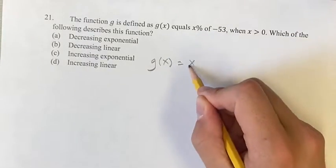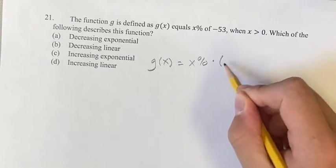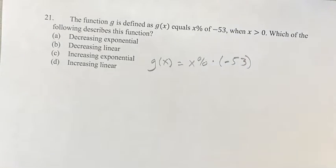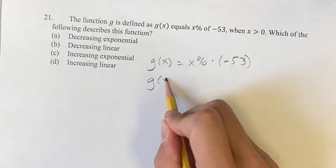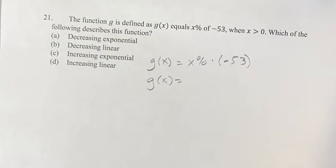So we're going to get that as x% times negative 53. What is x%? That's just x out of 100.